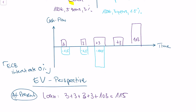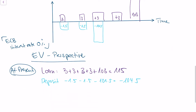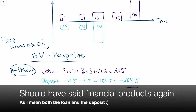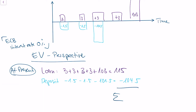Our deposit is valued at minus 1.5, minus 1.5, minus 100, and minus 1.5, which equals minus 104.5. This means the value of all our assets on the balance sheet is the sum of those, which is plus 10.5.